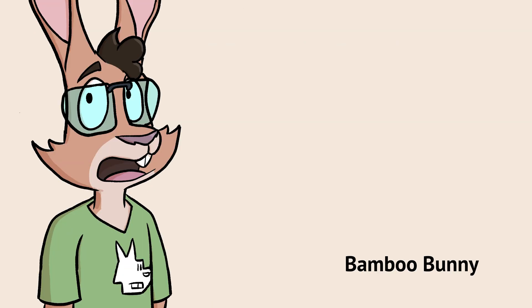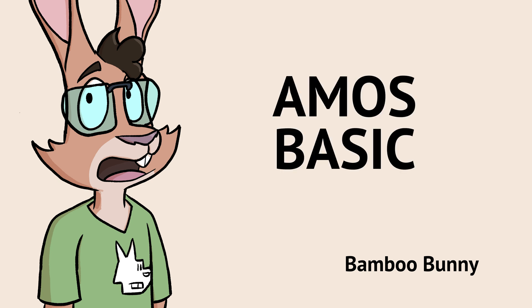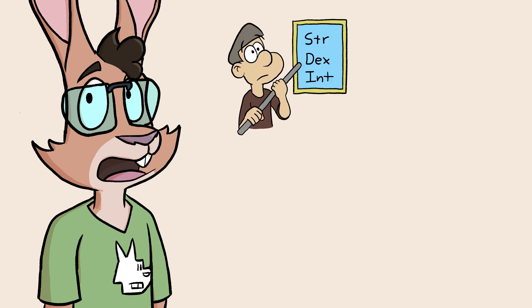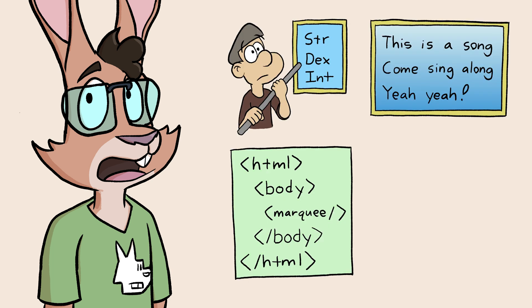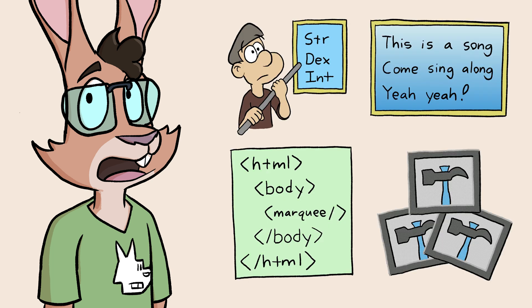I wrote a lot of code — like, a lot of code — in Amos Basic, a pretty advanced programming language made for the Amiga computer. Role-playing games, timed karaoke lyric playback, web browsers, and dozens of other things, either for myself or for publishing on the early internet.